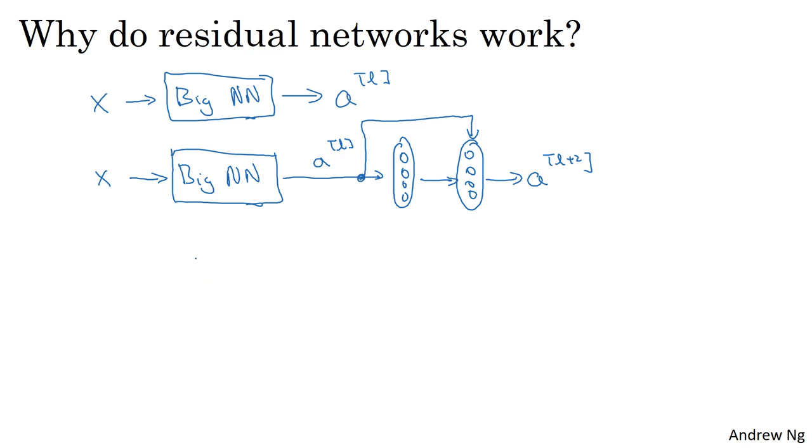And for the sake of argument, let's say throughout this network we're using the ReLU activation function. So all the activations are going to be greater than or equal to zero with the exception of the input x, because the ReLU activation outputs numbers that are either zero or positive. Now let's look at what AL plus two will be.